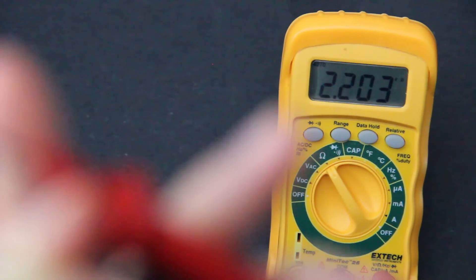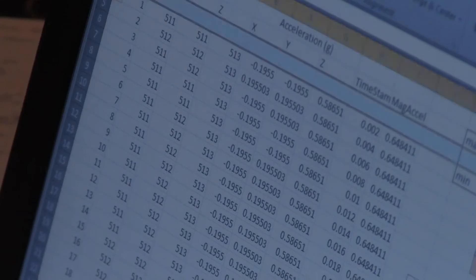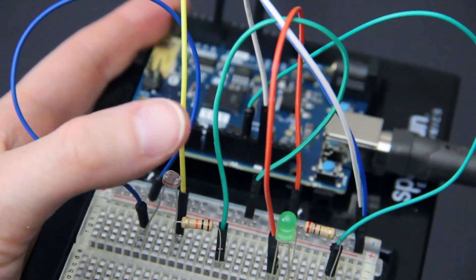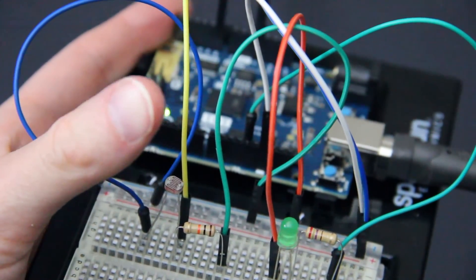So instead of just seeing numbers on the multimeter move, with the Arduino you can record them and graph them. You can also make your circuit smart by using information gained from sensors to alter other things in your circuit.